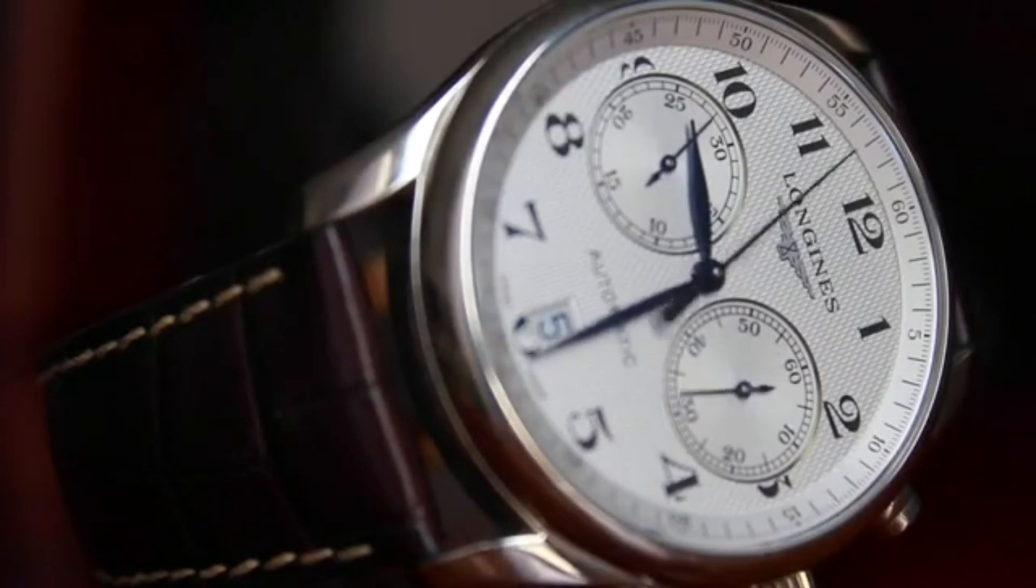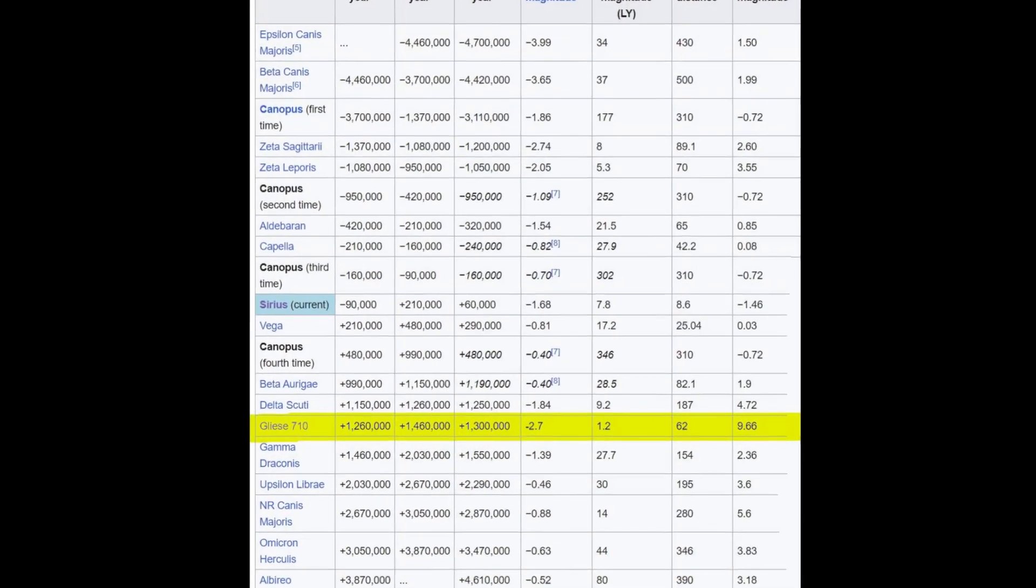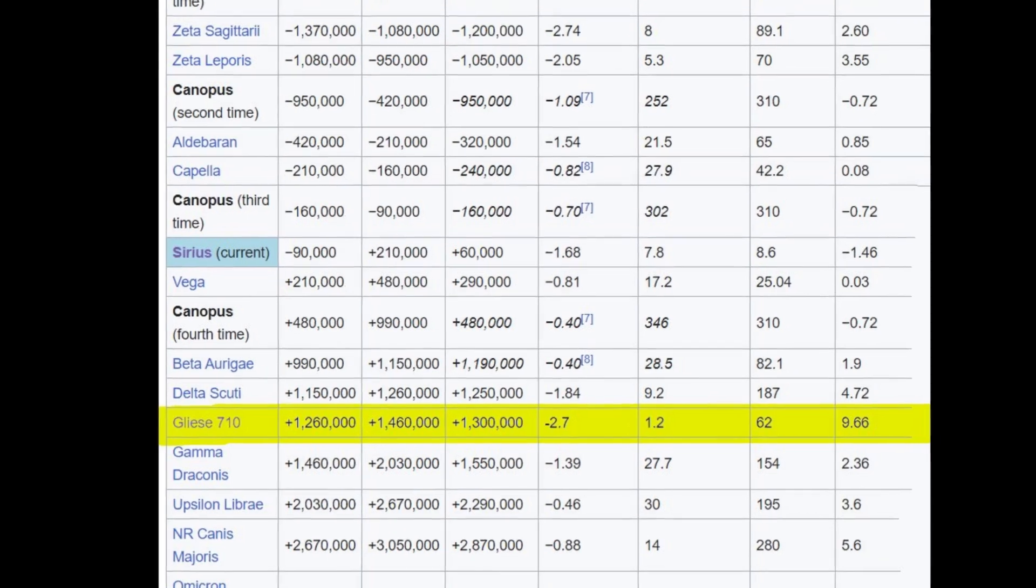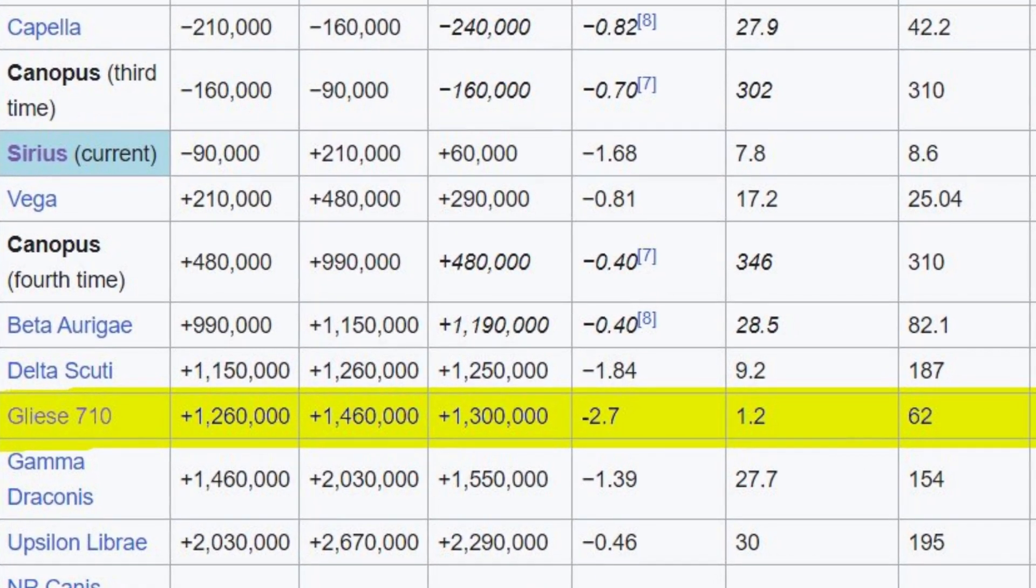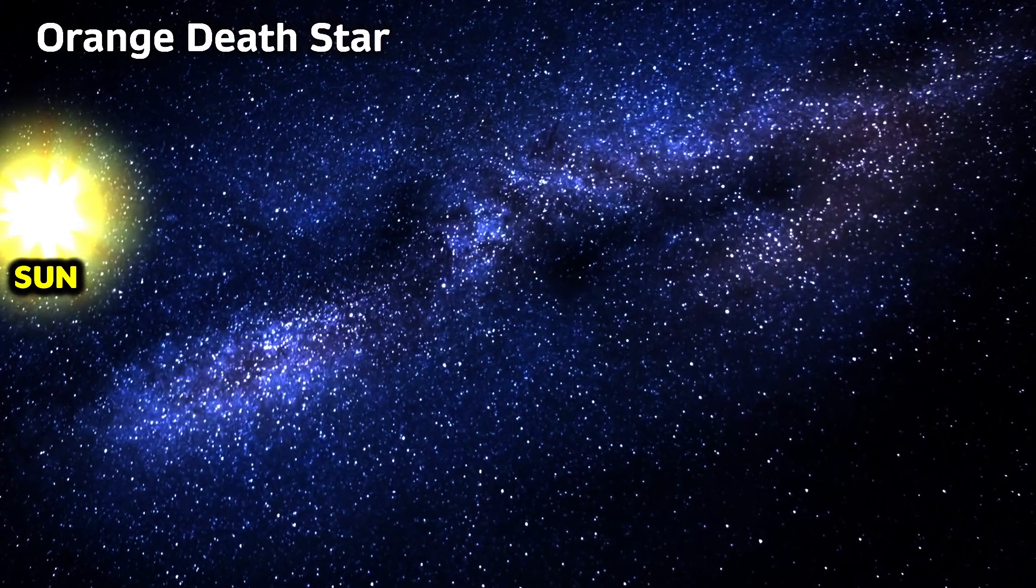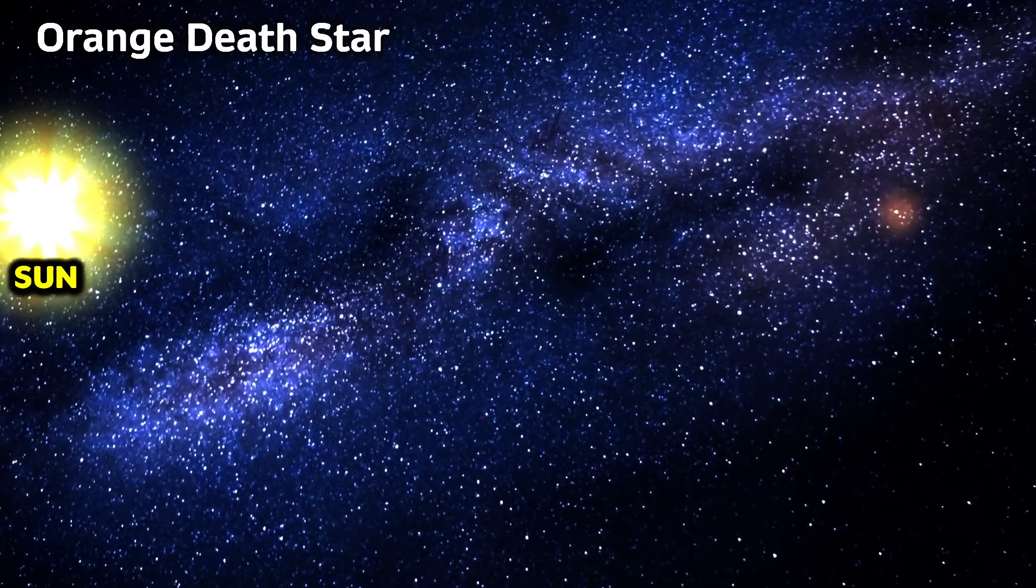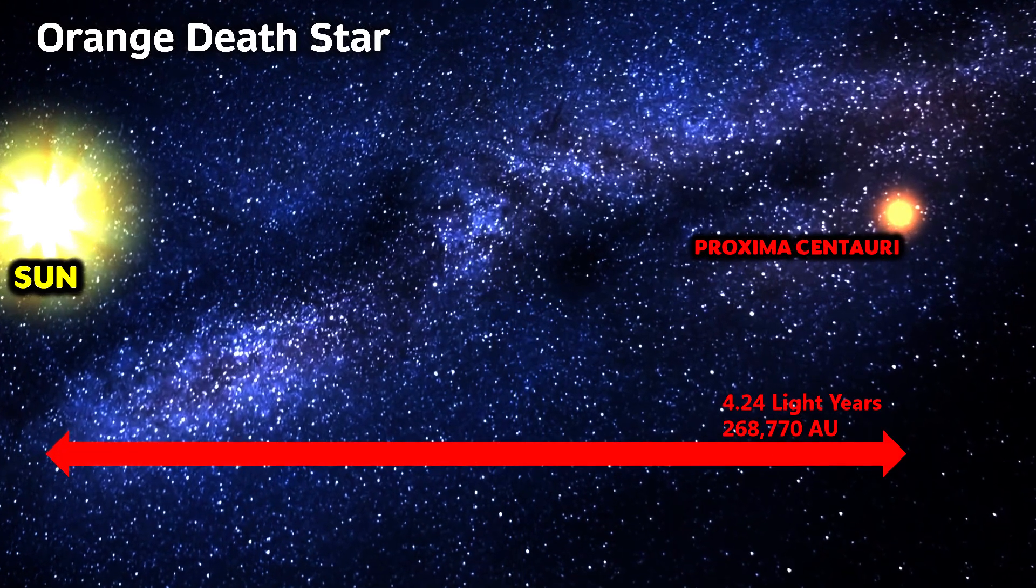In approximately 1.29 million years, Gliese 710 is projected to approach within an astonishingly close distance of just 0.17 light years or 10,520 astronomical units. To put this in perspective, it's a mere 1.25th of the current distance to our neighboring star, Proxima Centauri.